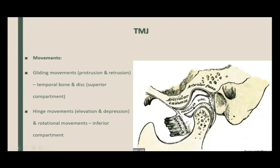Then there is the hinge movement — the movement of elevation and depression. When you open your mouth so that your jaw hangs down, that is depression. When you close your mouth from this open position, that is elevation. These movements, plus rotation of the mandible, take place in the inferior compartment — the compartment between the under surface of the articular disc and the upper surface of the condyle.